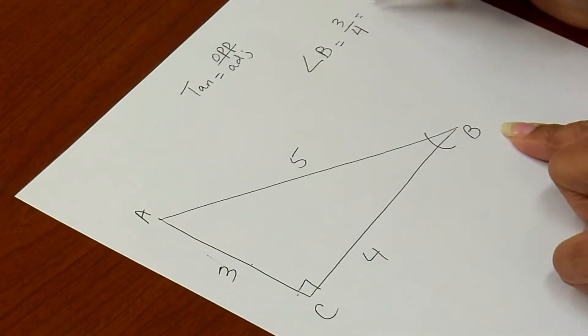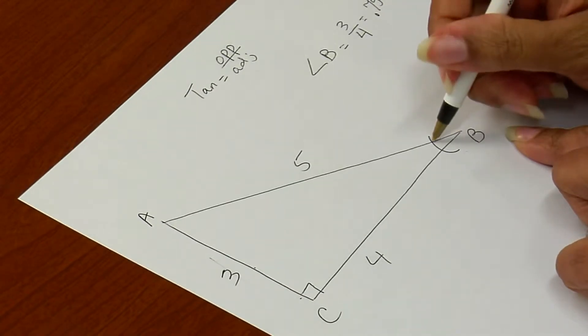That gives me the decimal value of it, 0.75 when I convert that, but I want the actual measure of that angle.